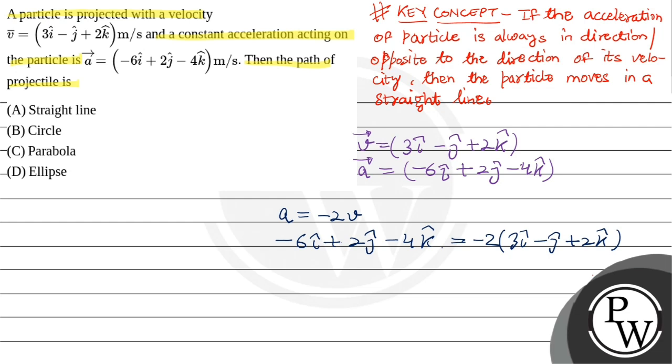The acceleration is antiparallel to the velocity. This proves the acceleration will decrease the velocity, so the path will remain as straight line motion.